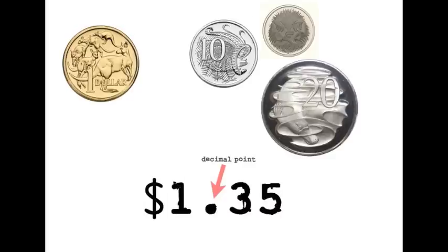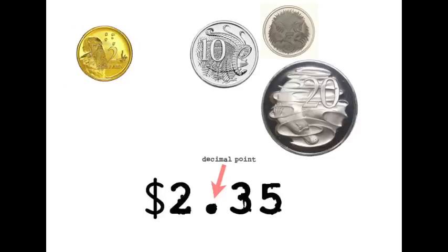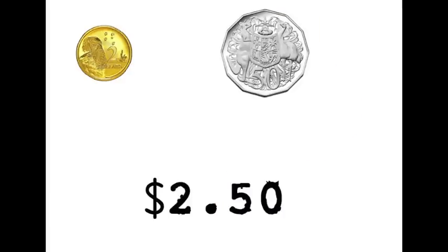One dollar and thirty-five cents. Notice how the one dollar hasn't changed — the whole number is on the left-hand side of the decimal point. Here we have two whole dollars and thirty-five cents. Two dollars and fifty cents looks like this. You'll notice the five comes before the zero. But when we have two dollars and five cents, we put the zero before the five.